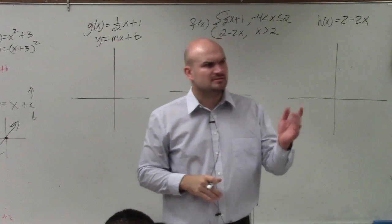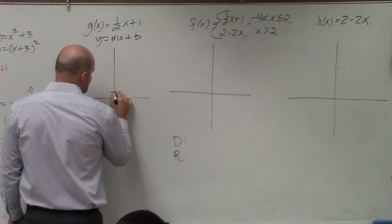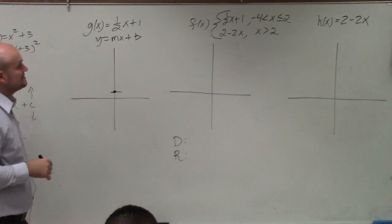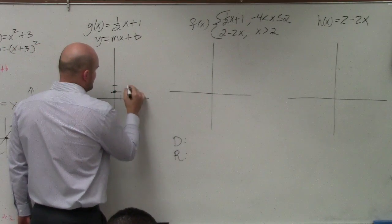Plot the y-intercept. So my y-intercept is at positive 1. I put a nice little dot. My slope, rise over run, 1 over 2. So I go up 1 over 2.